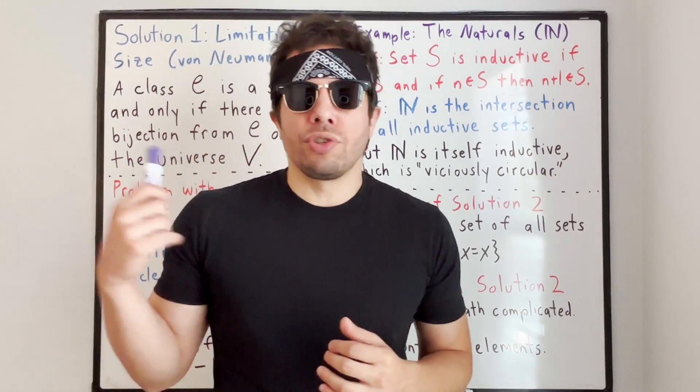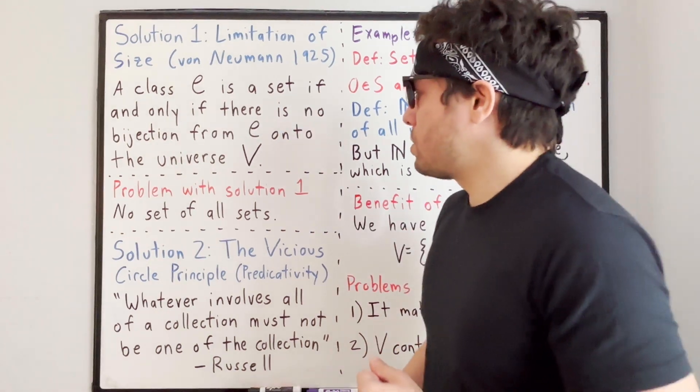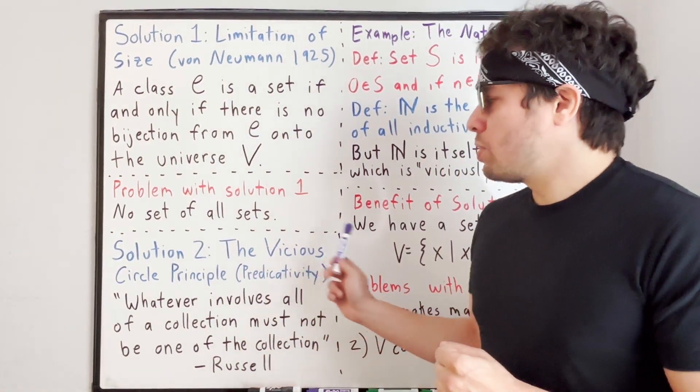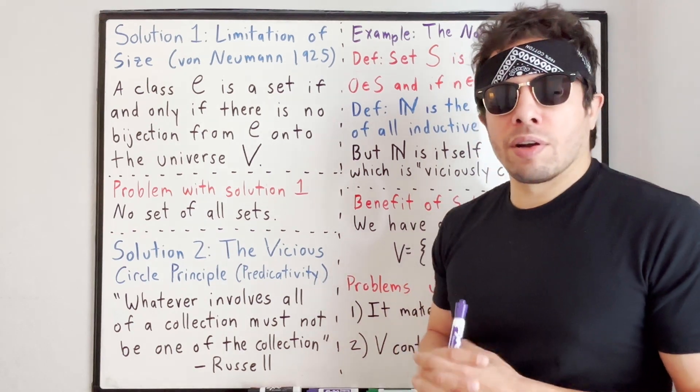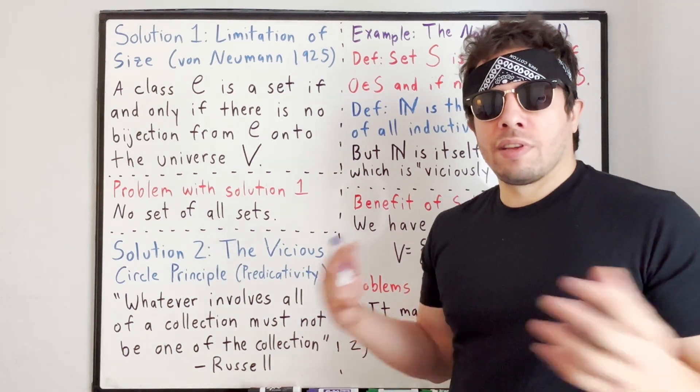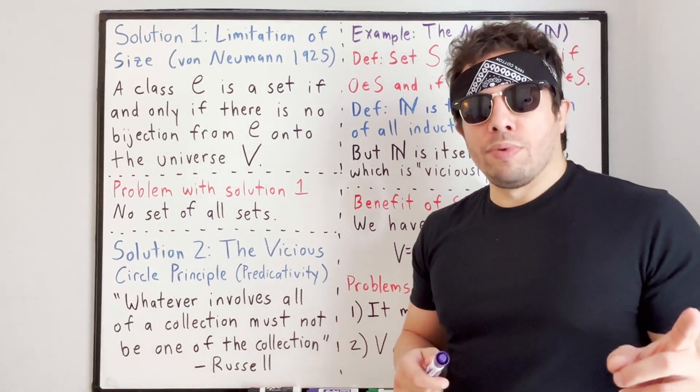Anyways, those are the two solutions. You have the limitation of size principle and strict adherence to the vicious circle principle. Which solution do you think is better? Please let me know in the comments. Thanks for tuning in. I hope you enjoyed it.